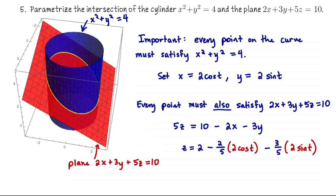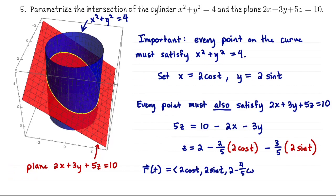Now we have all three variables written in terms of a single parameter t, so we're ready to write down the parametrization. So we have r of t is 2 cosine t, 2 sine t, 2 minus 4 fifths cosine t minus 6 fifths sine t. And then if I just want to sweep out this curve one single time, we'll have t go from 0 to 2 pi.